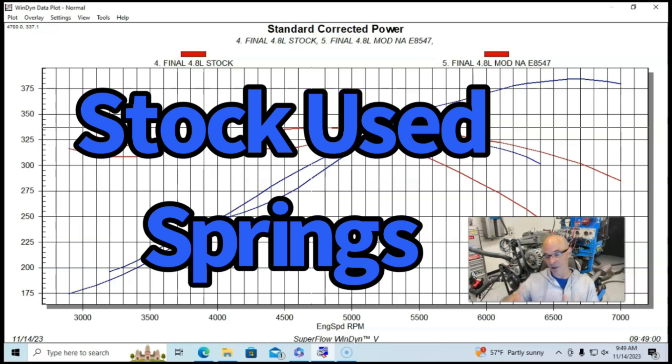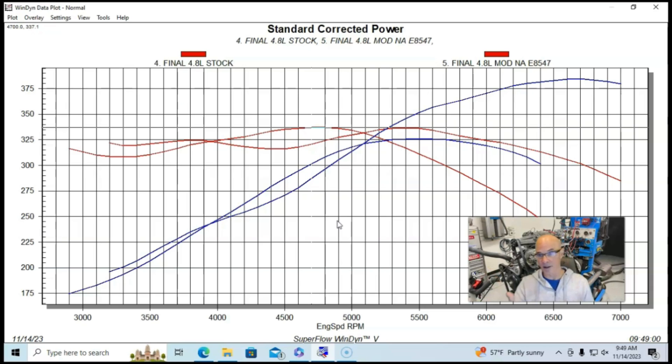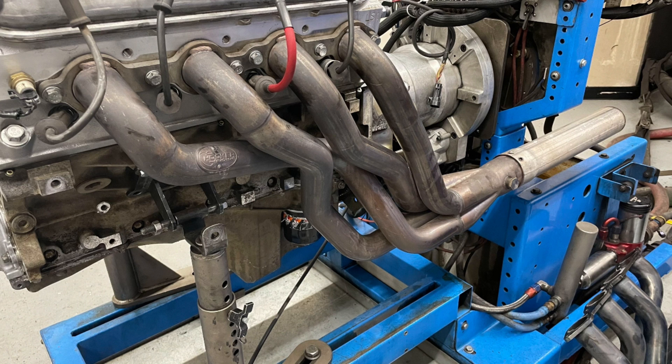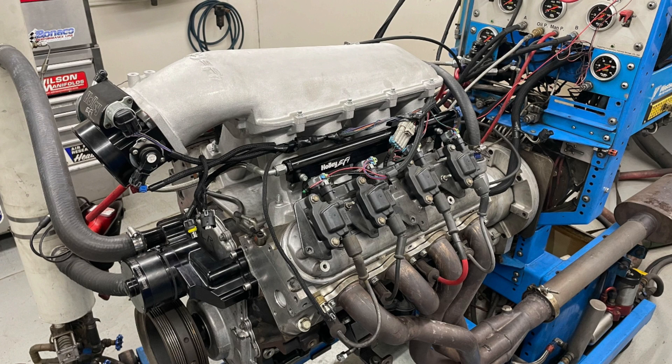The No Springs Required cam was run with the stock springs from the wrecking yard and we ran the thing out to 7000 RPM. Seemed to work great with this cam, so the cam obviously fairly stable, being a low lift camshaft, and made good power.